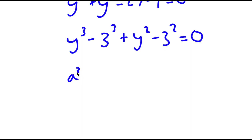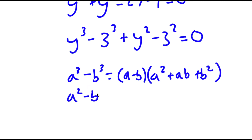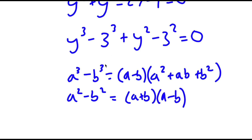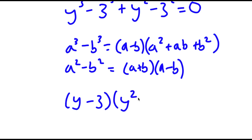If I have something in the form a to the power of 3 minus b to the power of 3, this is equal to a minus b times a squared plus ab plus b squared. And if I have something in the form a squared minus b squared, this is equal to a plus b times a minus b. So in this case, I can rewrite y to the power of 3 minus 3 to the power of 3 as y minus 3 times y squared plus 3 squared plus 3y.